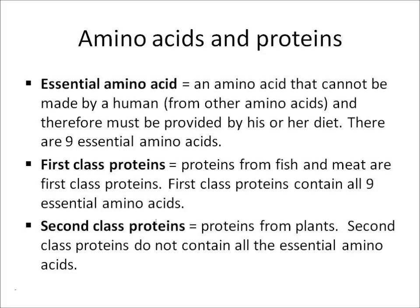With first class proteins — proteins from fish and from meat — they contain all the essential amino acids. There are also things called second class proteins, which are proteins from plants, and second class proteins do not contain all of those essential amino acids.